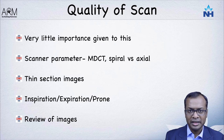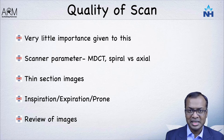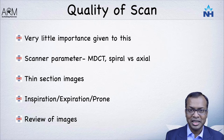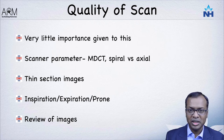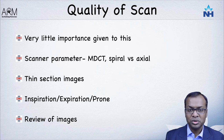When it comes to quality of scan, very little importance is given to it in many units. Scanner parameters matter — a multi-detector CT like a 64-slice CT is better than an 8-slice or 16-slice CT because the breath-hold time required is minimal. Patients with advanced fibrotic lung disease get better scan quality with shorter breath-hold duration. Thin section images are essential, and inspiratory imaging must be of very good quality. Most patients also require expiratory scan imaging to look for areas of air trapping.